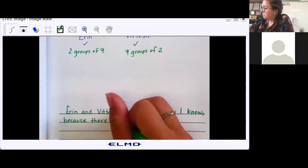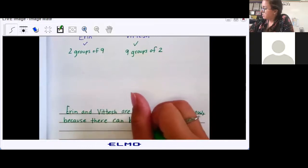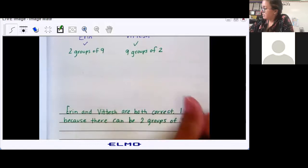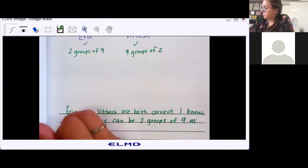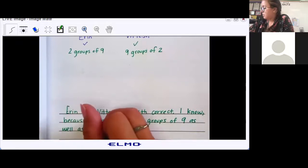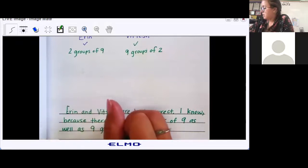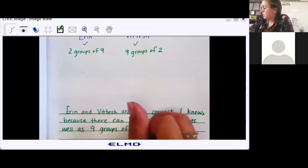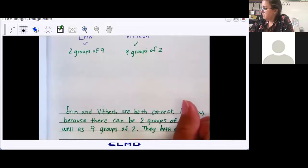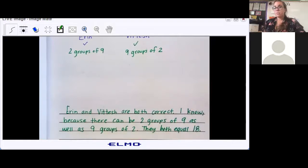there can be two groups of nine, as well as nine groups of two. They both equal 18. So hopefully you had something written along those lines.